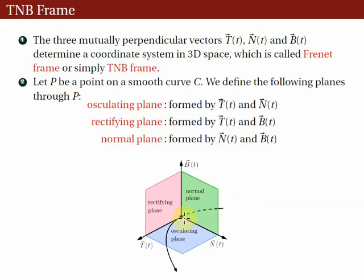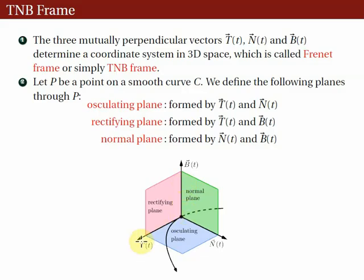We have here a point P on a smooth curve C. We define the following planes through point P. The osculating plane is the plane formed by the unit tangent and the unit normal vectors. The rectifying plane (this red plane) is formed by the unit binormal and unit tangent vectors. And the normal plane (this green plane) is formed by the unit binormal and the unit normal vectors.